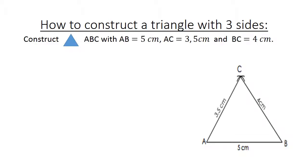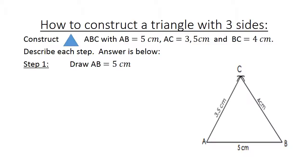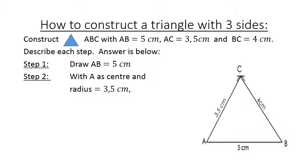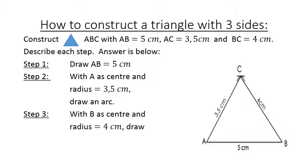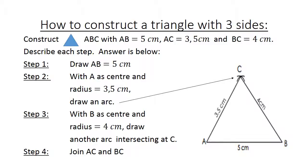How to construct a triangle with three sides. We are going to construct triangle ABC with AB equals five centimeters, AC equals three point five centimeters, and BC equals four centimeters. Step one: draw AB equals five centimeters. Step two: with A as center and radius three point five centimeters, draw an arc at C. Step three: with B as center and radius four centimeters, draw an arc intersecting at C. Then join AC and BC.